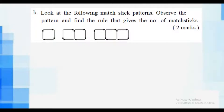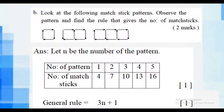This question is from the patterns topic. Look at the given matchstick patterns, observe the pattern, and find the rule. To answer such questions, consider n as the number of patterns and form a table with number of patterns and number of matchsticks. Forming the table carries 1 mark, and writing the rule correctly carries 1 mark — a total of 2 marks.